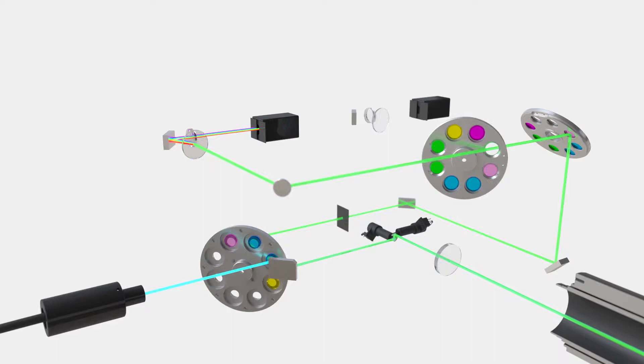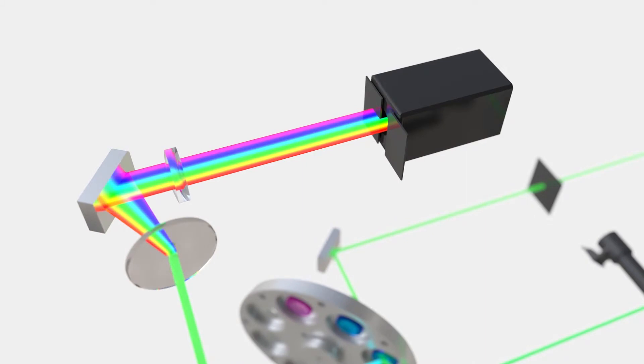At the detector, TrueSpectral technology employs a volume phase hologram to diffract light with up to three-fold higher transmission efficiency versus reflection gratings.